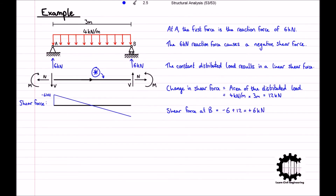Remembering the convention used for internal force diagrams, the shear force diagram increases linearly from negative 6 kN at point A to 0 kN at the centre of the bar, and to positive 6 kN at point B.